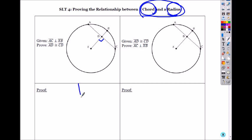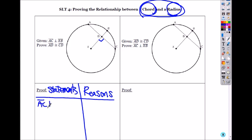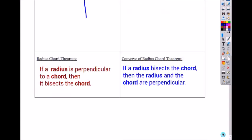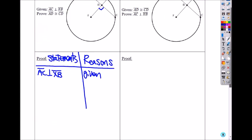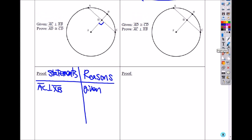So let's do the two-column proofs. Remember, the two-column proofs, we write the statements and reasons. So what was given? Segment AC is perpendicular to XB, and that is given. So can I put this perpendicular sign there? And let's see what we are trying to prove. Segment AD is equal to that.